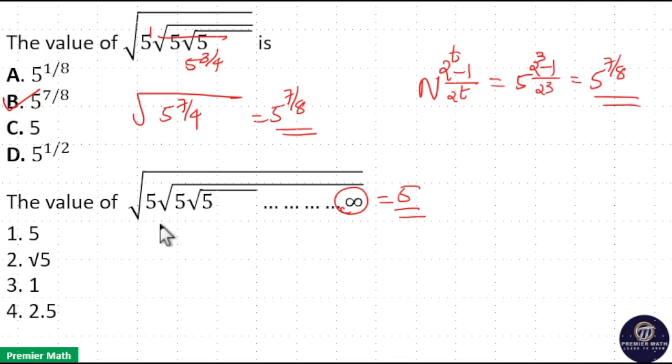In the second case, consider this whole term, that is root 5 * root 5 * root 5 up to infinity as y. Then even if you ignore this first term, the remaining term will also equal y. Because compared to these infinite terms of root 5, this root 5 is very minute. So ignore this one.